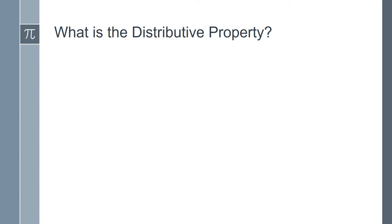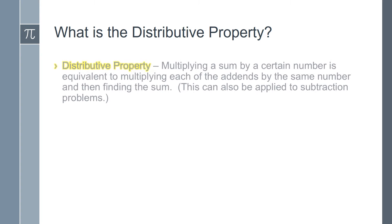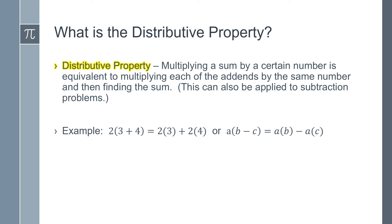Let's start by defining the distributive property. The distributive property states that multiplying a sum by a certain number is equivalent to multiplying each of the addends by the same number and then finding the sum. This can also be applied to subtraction problems. For example, 2 times (3 plus 4) is equivalent to 2 times 3 plus 2 times 4. Or, a times (b minus c) is equivalent to a times b minus a times c.